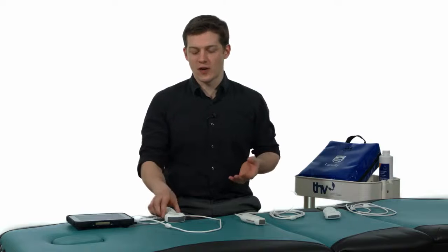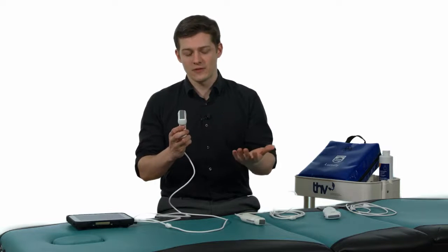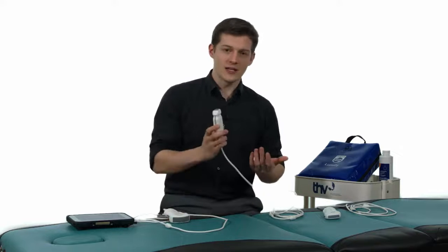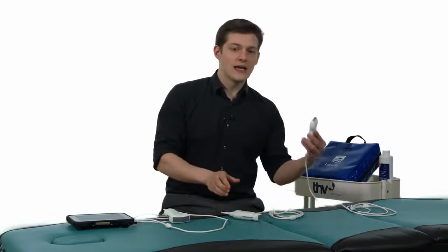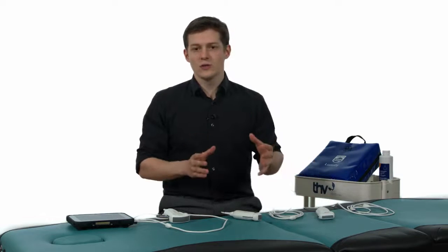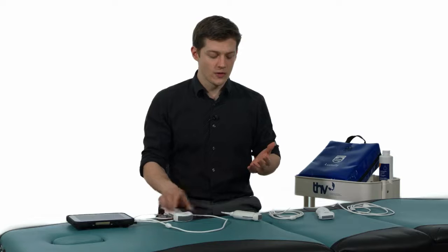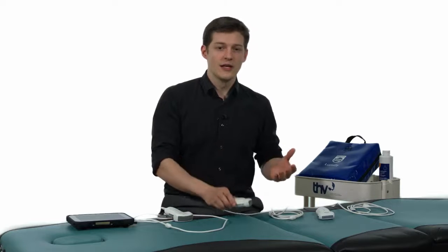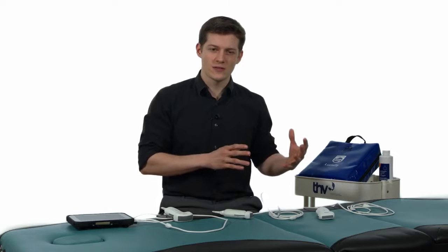You can use a convex probe, here the convex probe, it's used for greater depths. You can use a cardiac probe, here you see the smaller surface, or you can use a linear transducer. Be aware that you should use a transducer where you have a specific lung preset. For the detection of pleural effusion, use a convex probe or the cardiac probe.